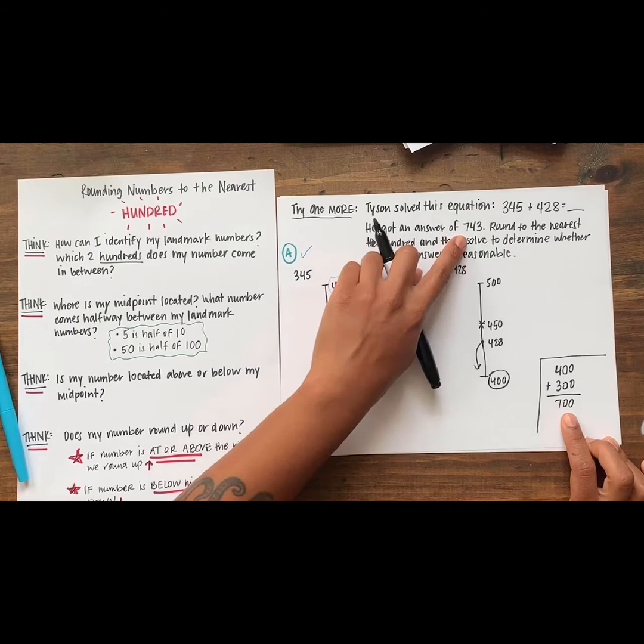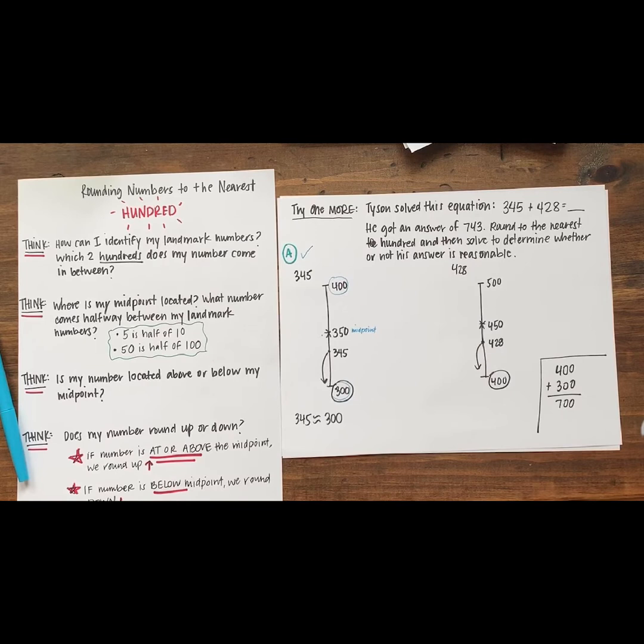700 is close to 743. So, do we think that Tyson's answer is reasonable? Say it out loud. Yes, Tyson's answer is reasonable because 743 is pretty close to 700.